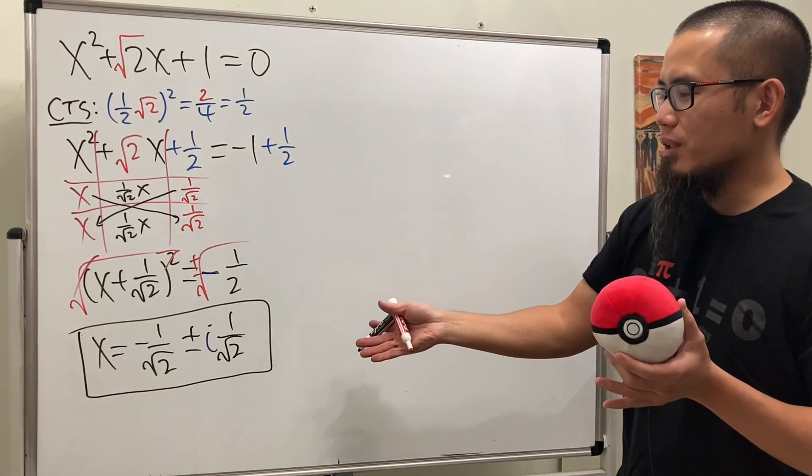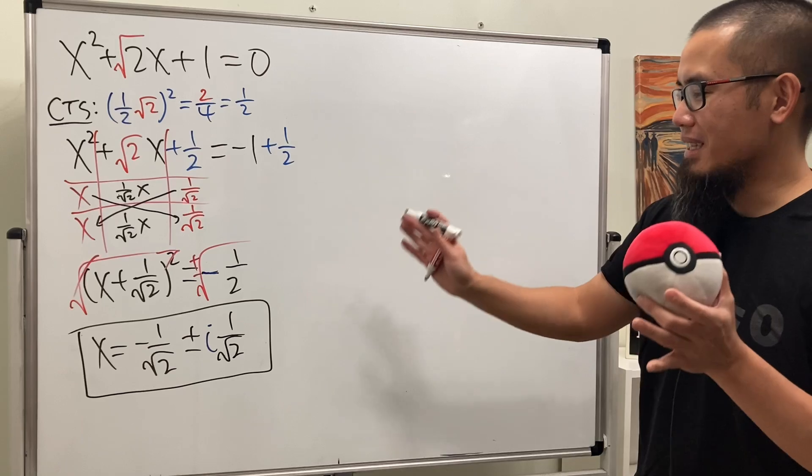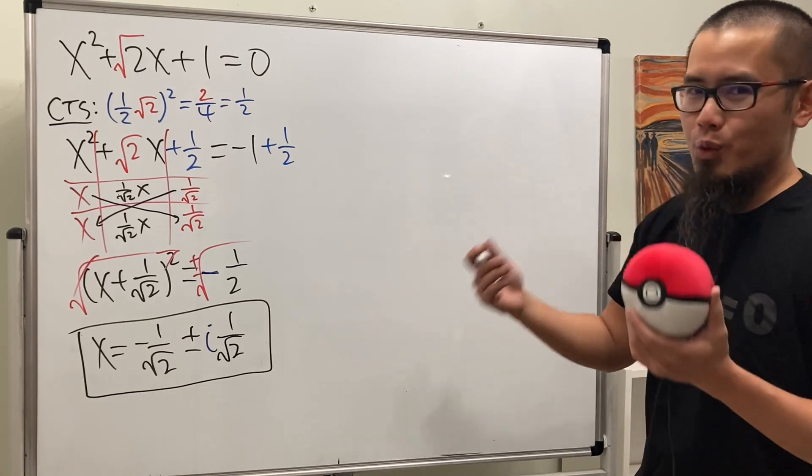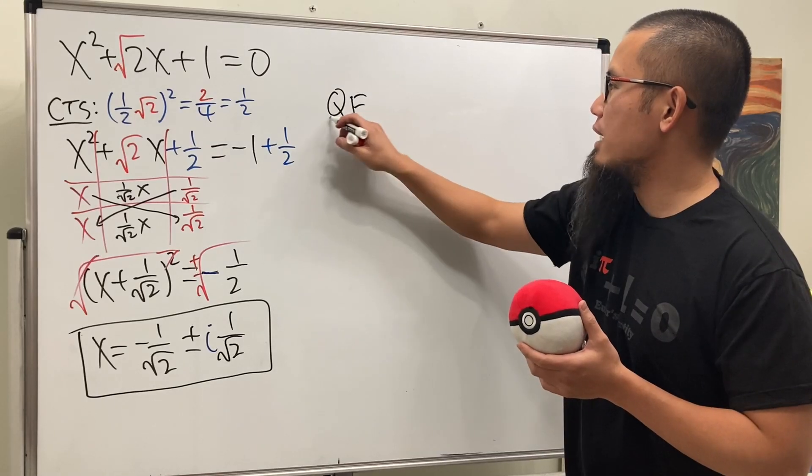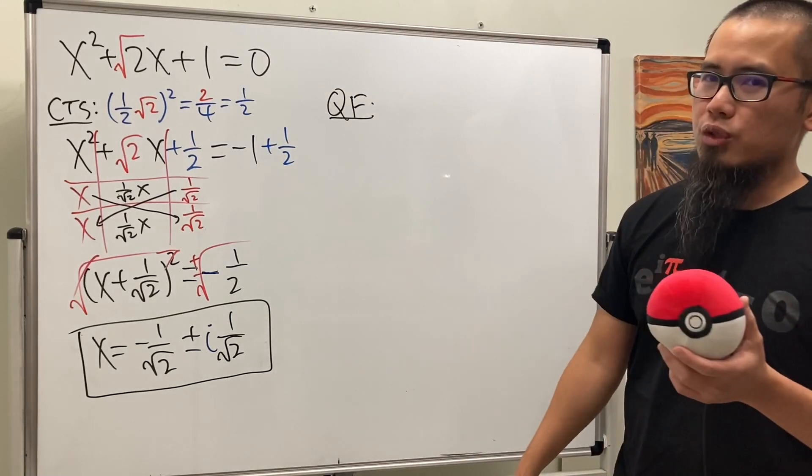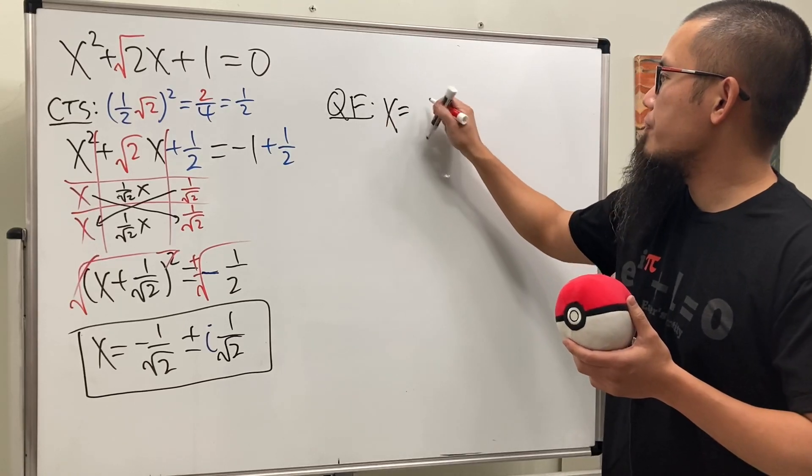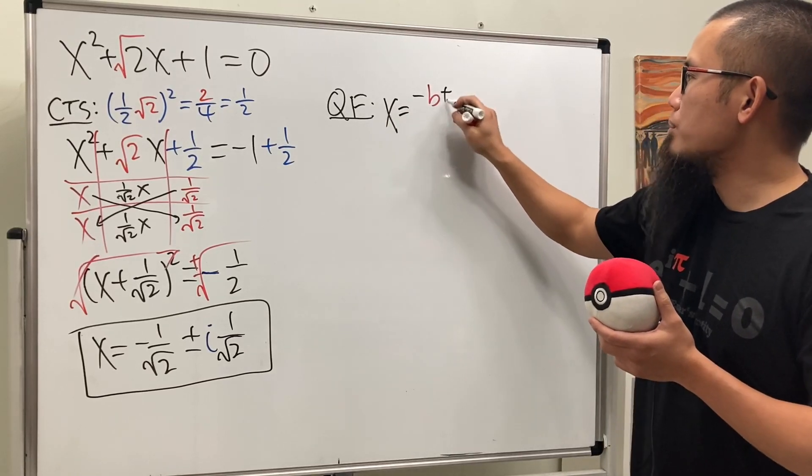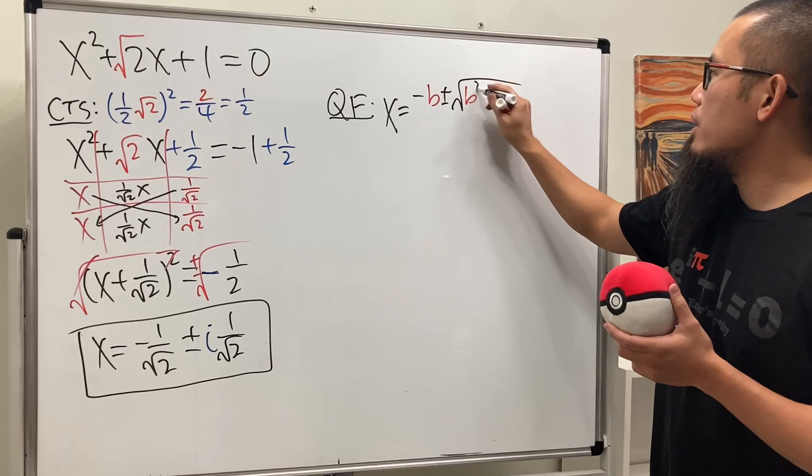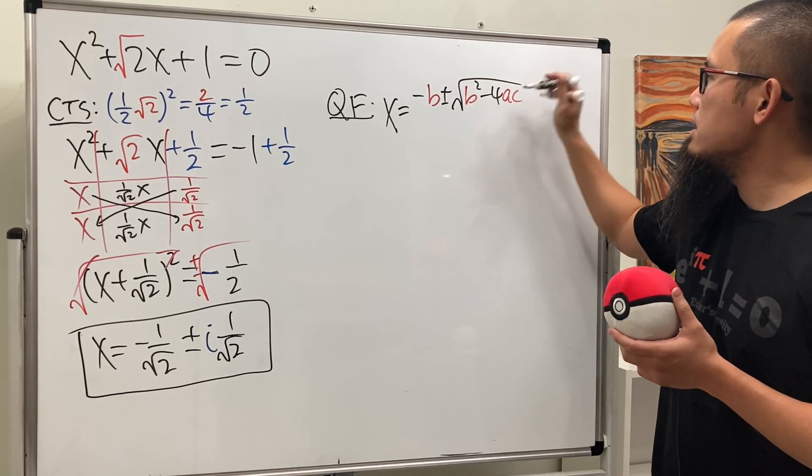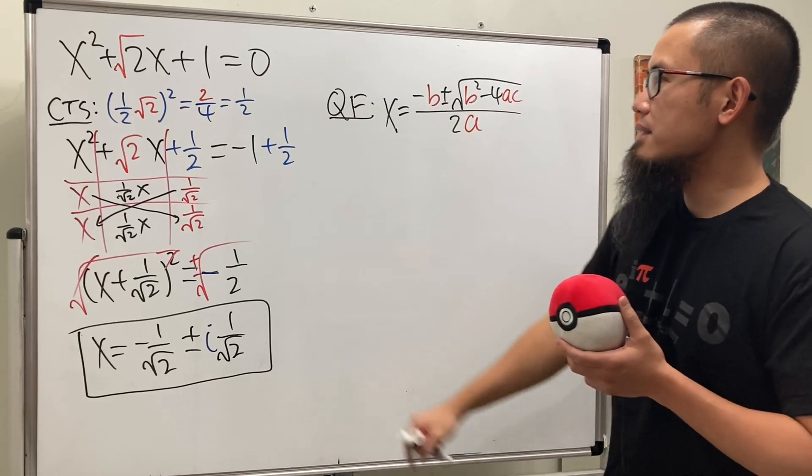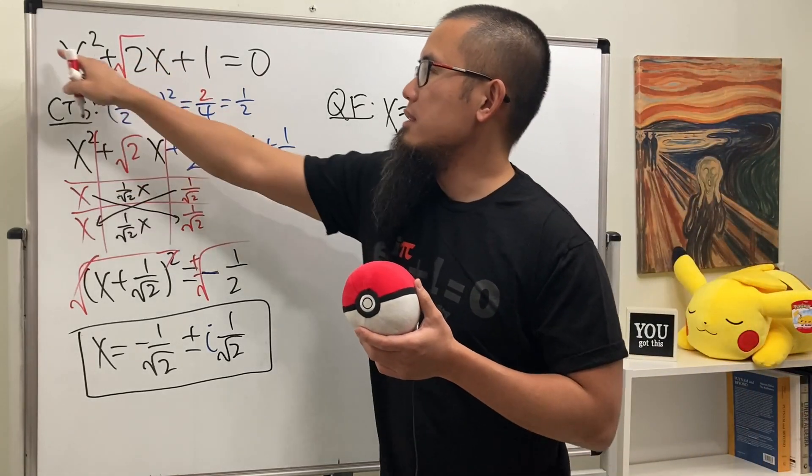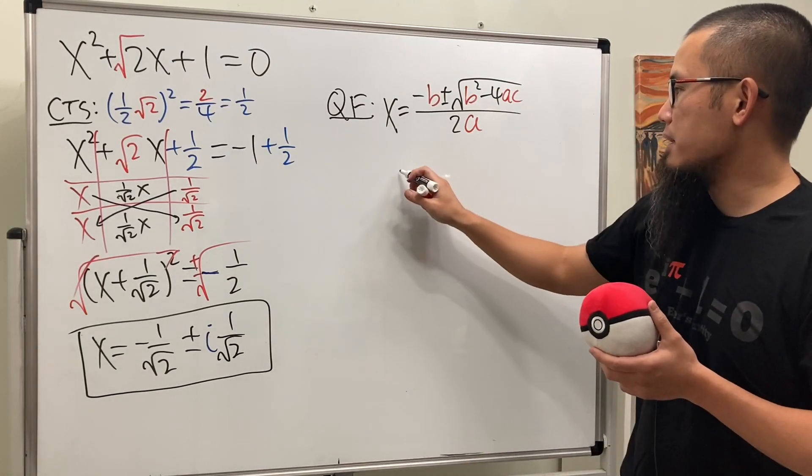And maybe some of you guys recognize what this number is. I'm not going to tell you. But let's go ahead and try the quadratic formula. So maybe you guys can tell me which one you guys like better. Of course, the quadratic formula says we have x equals negative b plus or minus square root of b squared minus 4ac all over 2a. In this case, this right here is our b, this is the a, and this is the c. Right?